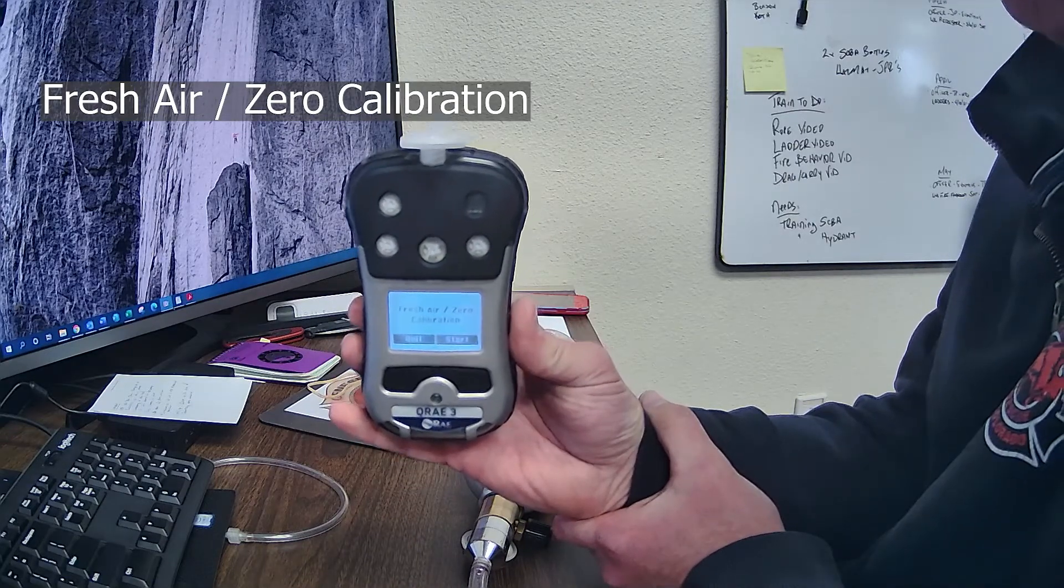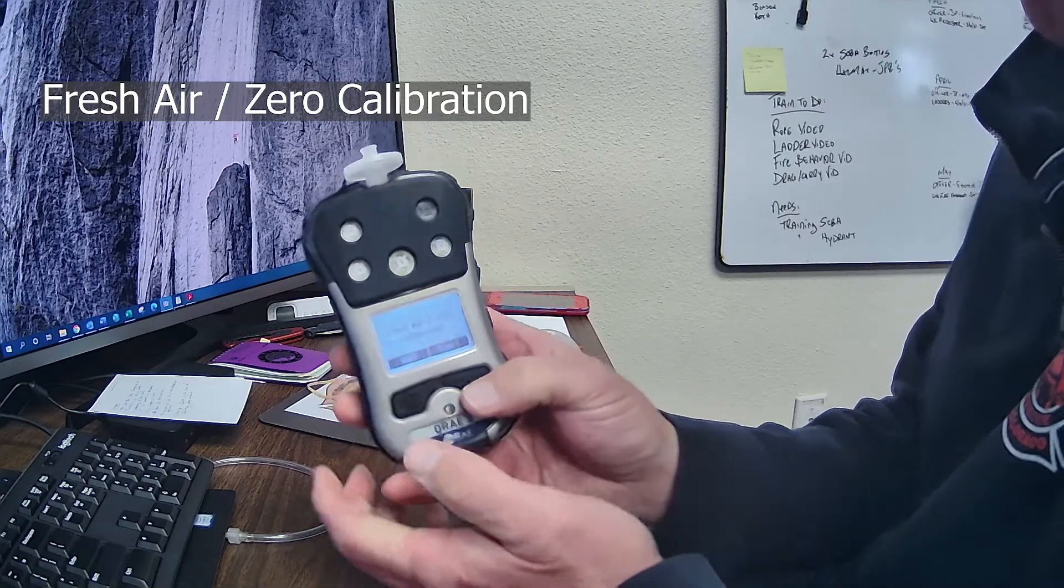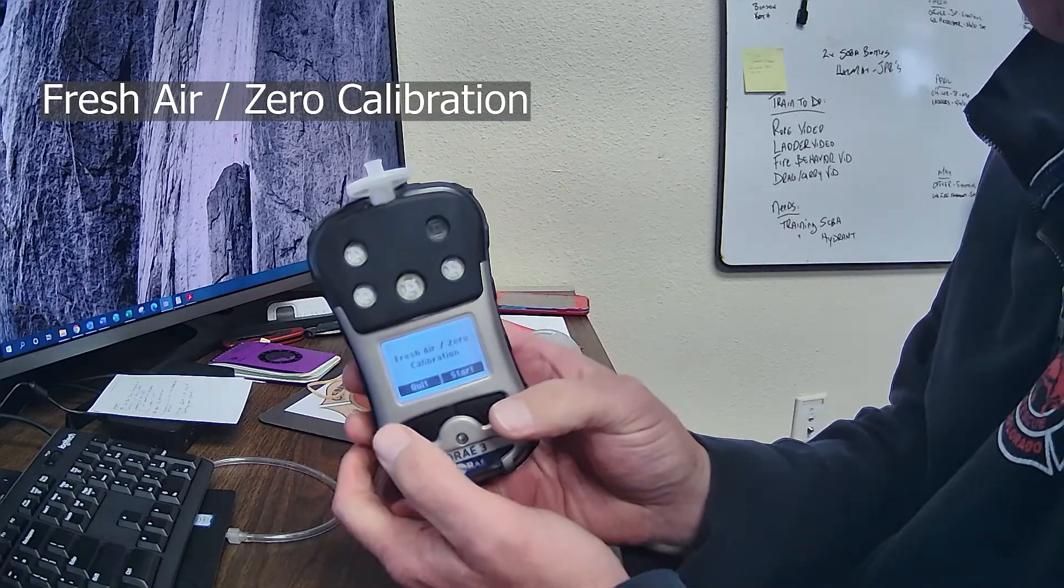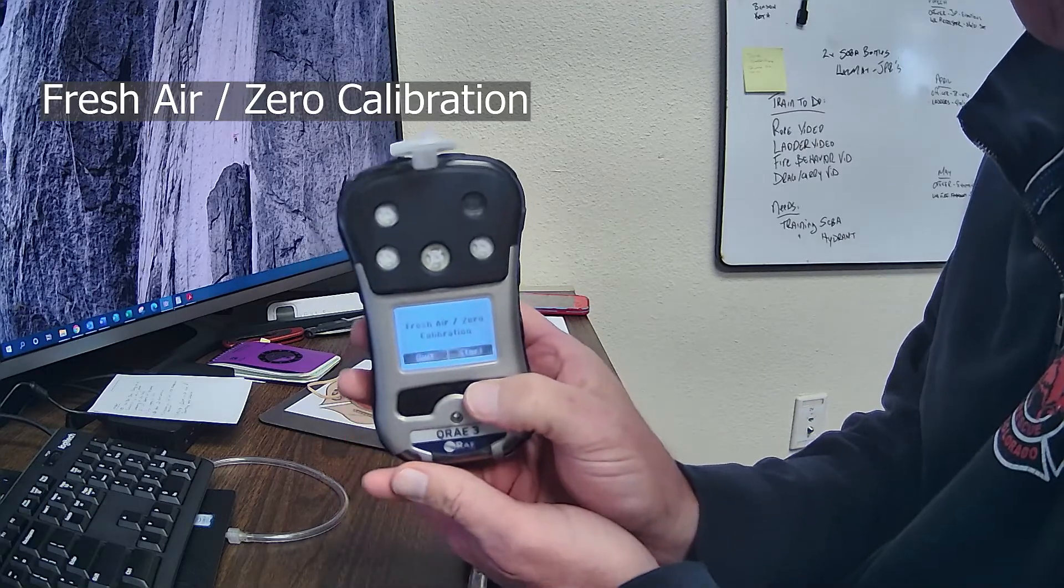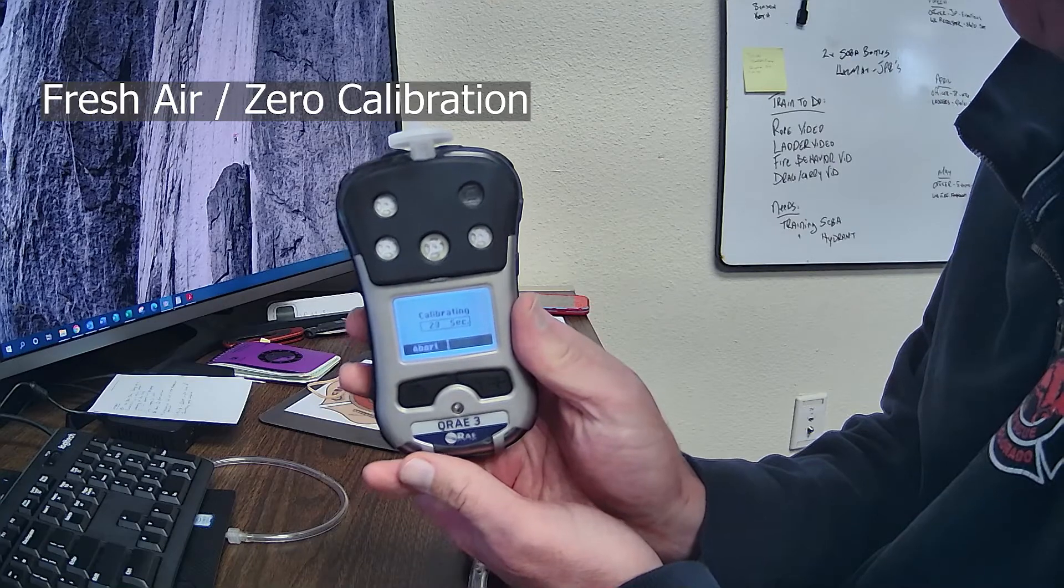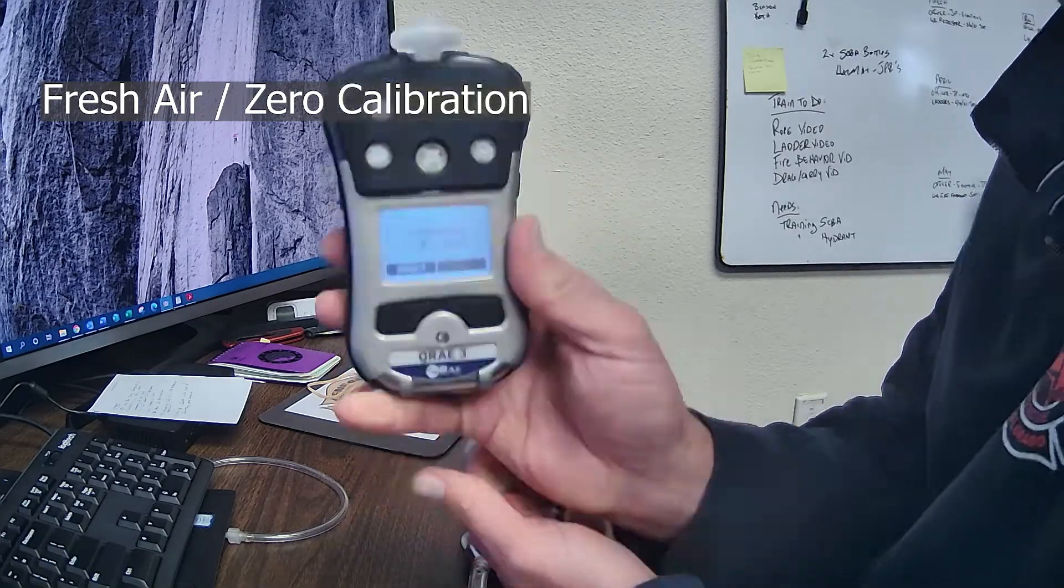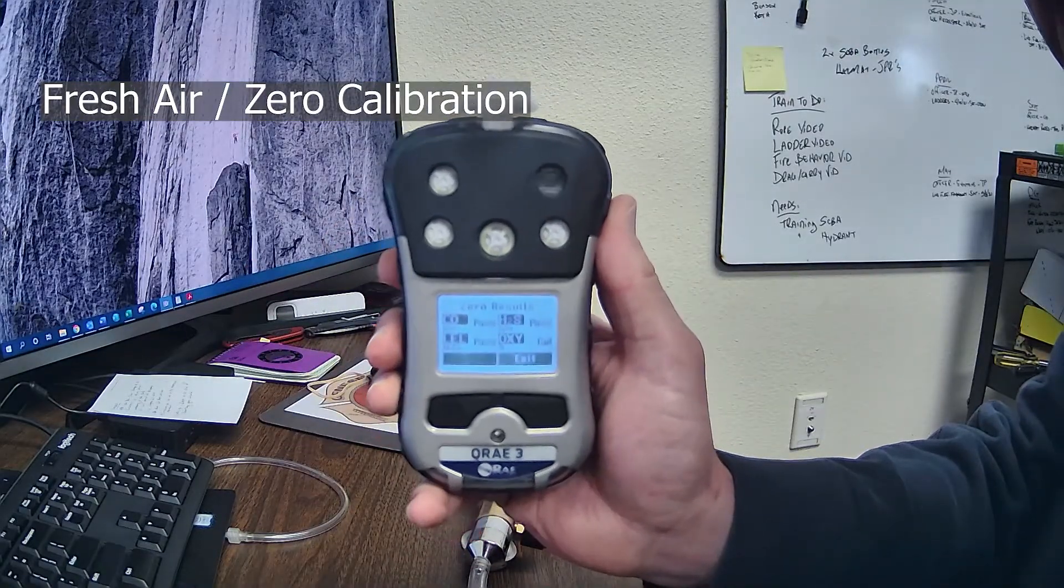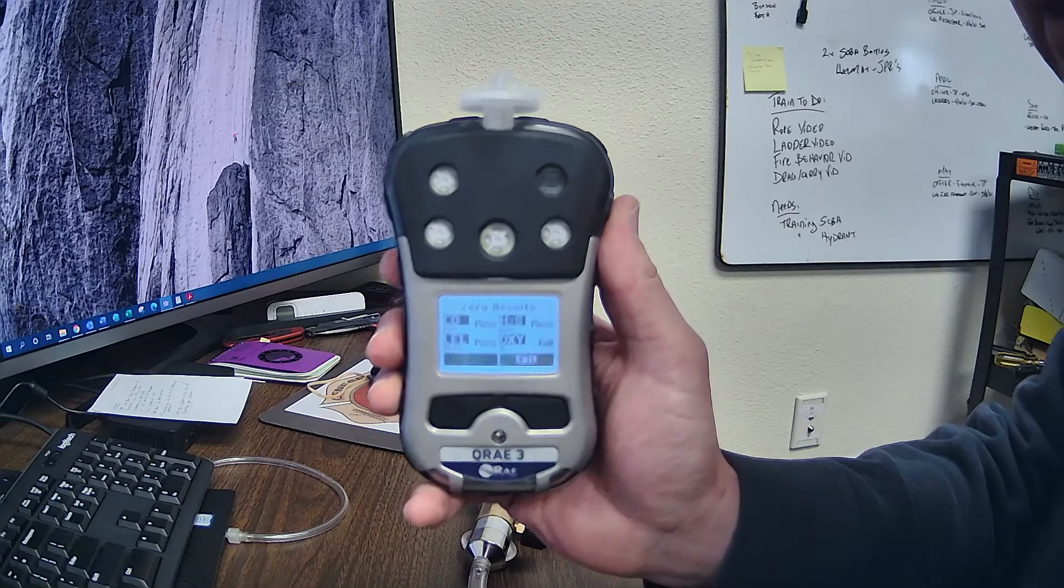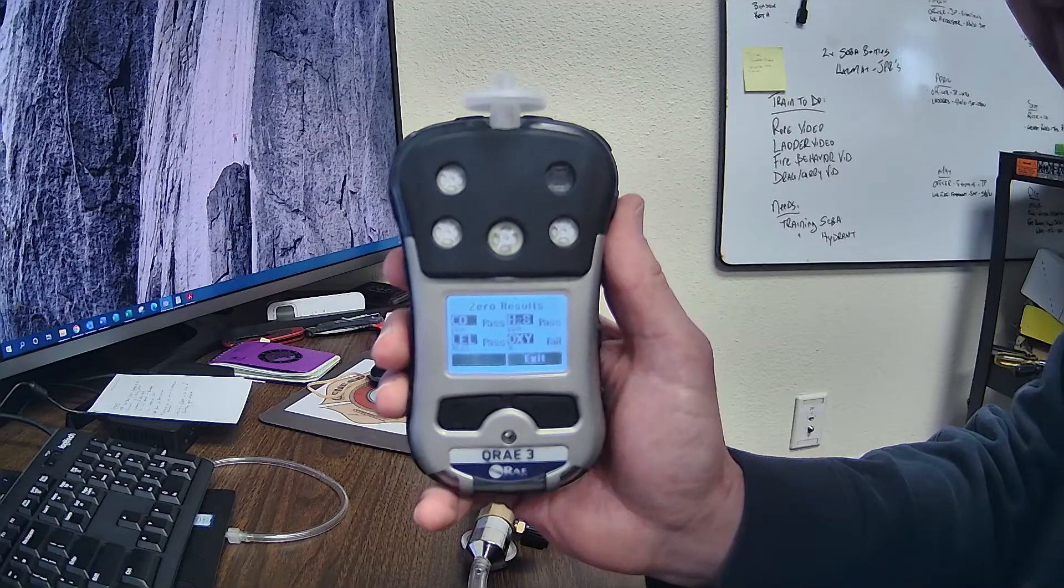So fresh air is zero calibration. You can either quit, they're a little bit different than the other one. You can quit, or you can start. So if you want to start the fresh air zero calibration, go ahead and do that. Takes about 27 seconds. Okay, calibration readings show pass, but the oxygen sensor failed. Ooh, that's not good.